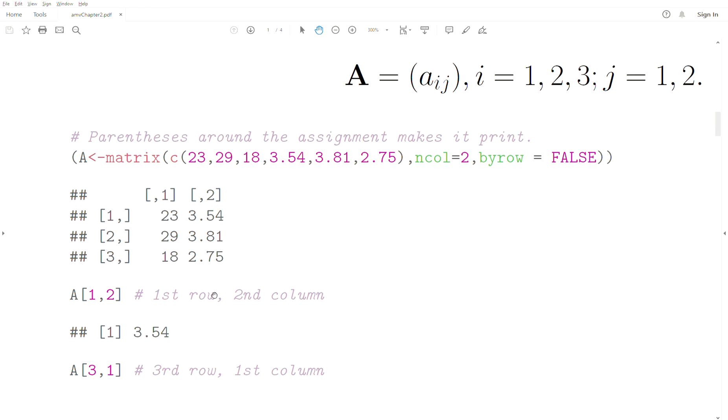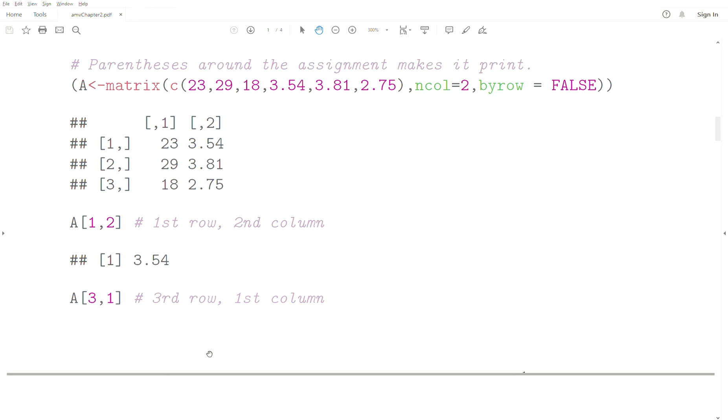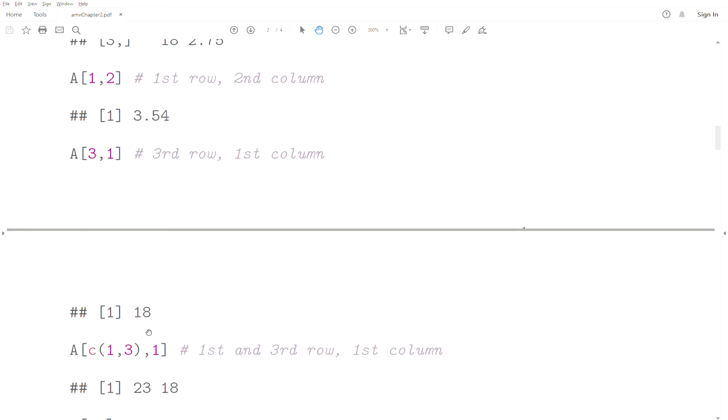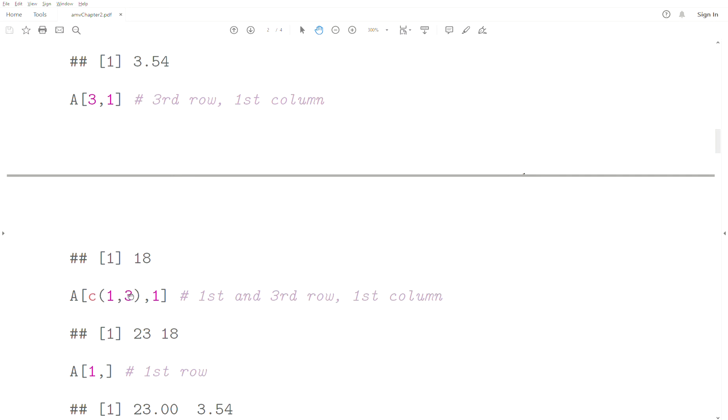Now we can start picking off specific elements within that matrix using square brackets. What goes before the comma are the rows, and what's after the comma are the columns. So A[1,2] is the first row, second column, which is 3.54. A[3,1] is the third row, first column, which is 18. This is an array of numbers. If we want the first and third row, first column, it picks off these two numbers.